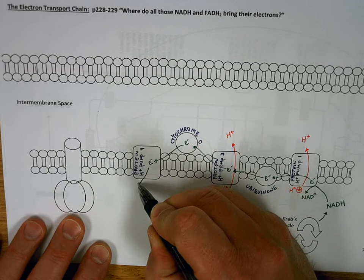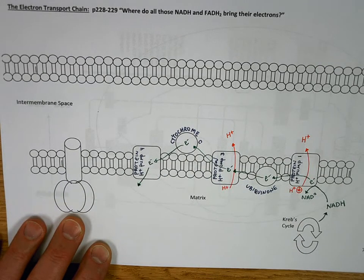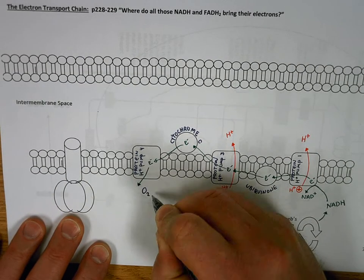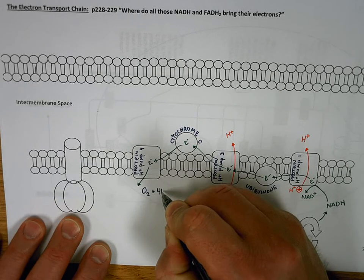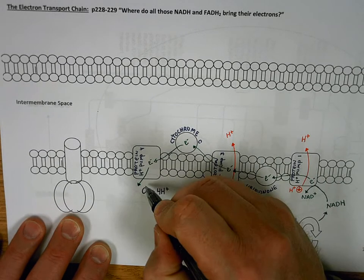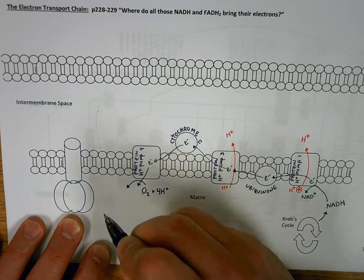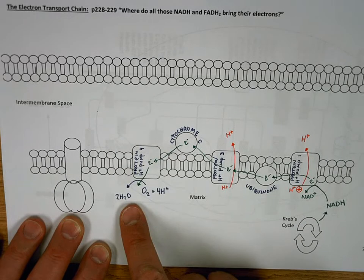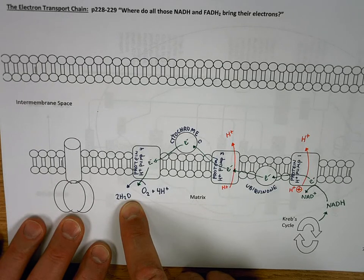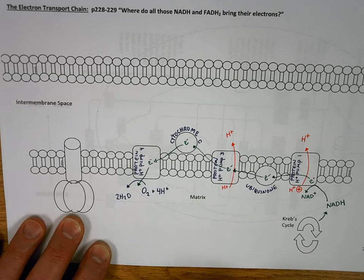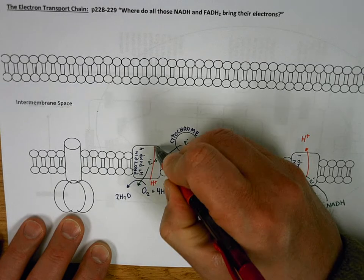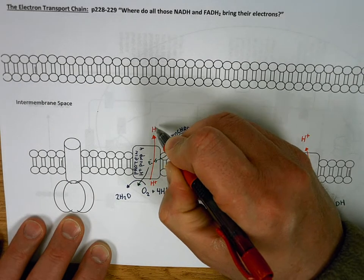Pump four needs to dump off its electron, but to do that there has to be an electron acceptor. The final electron acceptor here is oxygen gas. Oxygen gas and four hydrogen ions, when they receive these electrons, form two molecules of water. That's the end of the line for the electrons that started out in glucose and ended up on the oxygen to make water. When that electron passes through pump four, pump four pumps a hydrogen ion out of the matrix into the intermembrane space.